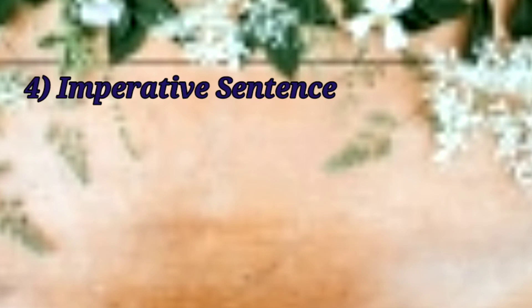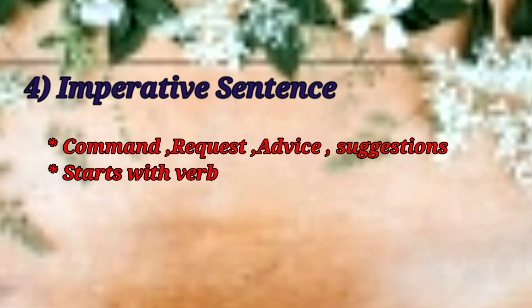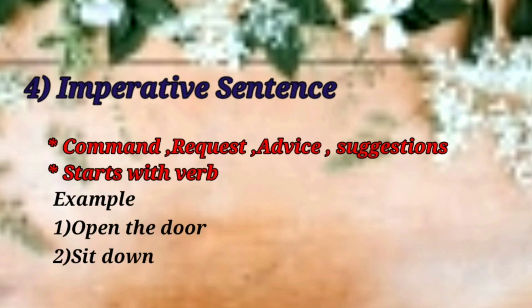The fourth type is imperative sentence, which some students find a bit confusing. The first condition of an imperative sentence is that it contains a command, advice, request, or suggestion. The most important point is that imperative sentences start with a verb. For example: 'Open the door', 'Sit down'. A verb represents an action — any word that represents an action is a verb. So 'sit' is also an action word.